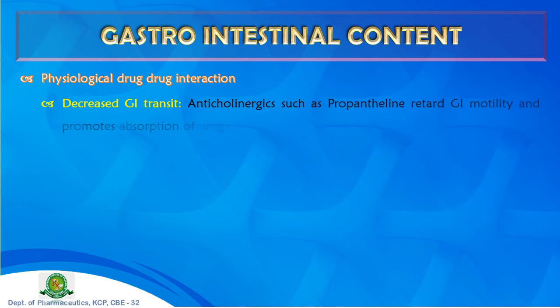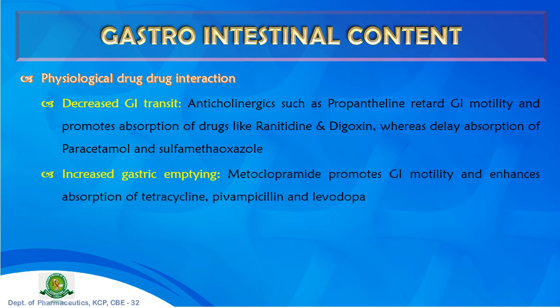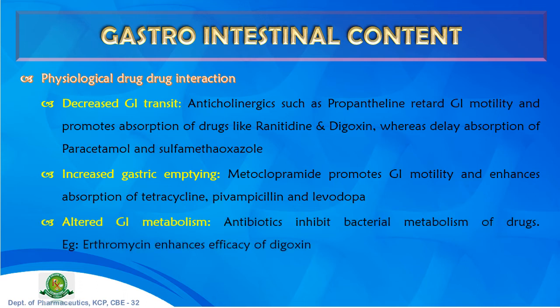Physiological drug-drug interactions include: decreased GI transit — anticholinergics such as propantheline retard GI motility and promote absorption of ranitidine and digoxin, while delaying absorption of paracetamol and sulfamethoxazole; increased gastric emptying — metoclopramide promotes GI motility and enhances absorption of tetracycline, pivampicillin, and levodopa; and altered GI metabolism — some antibiotics inhibit bacterial metabolism of drugs (e.g., erythromycin enhances the efficacy of digoxin).